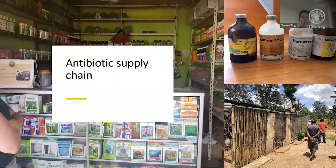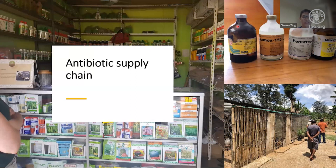With the necessary frameworks and approaches in place, the next step was to understand the antibiotic supply chain. This gives a more strategic approach to developing AMU and AMR monitoring and indicates where to concentrate the limited resources available. To develop the supply chain map, visits were made to different actors involved in importing, distributing, selling, and using antibiotics, including agriculture shops, government vet services, and farms.